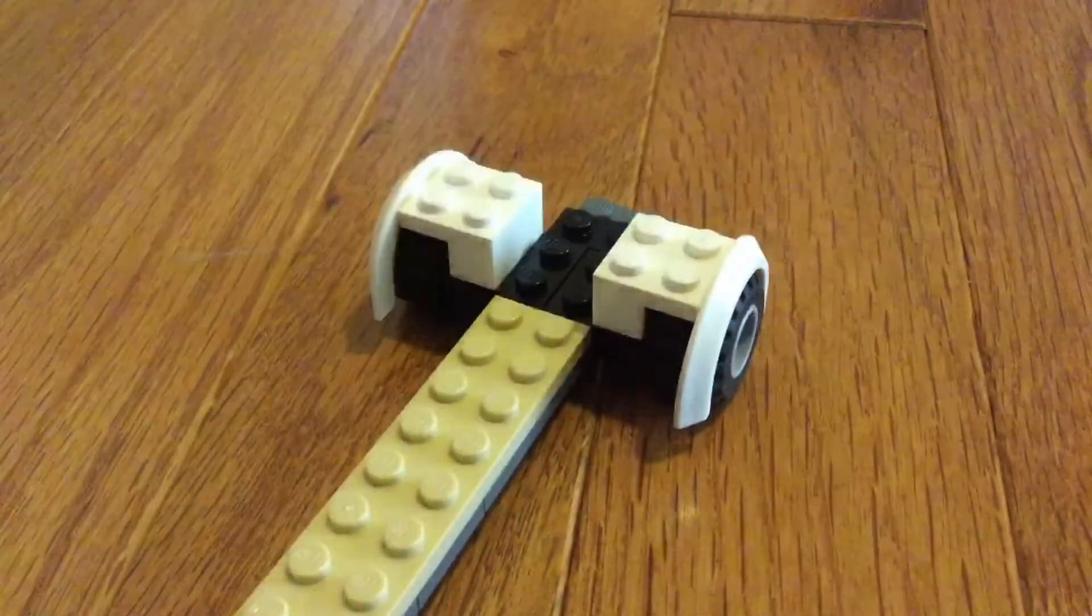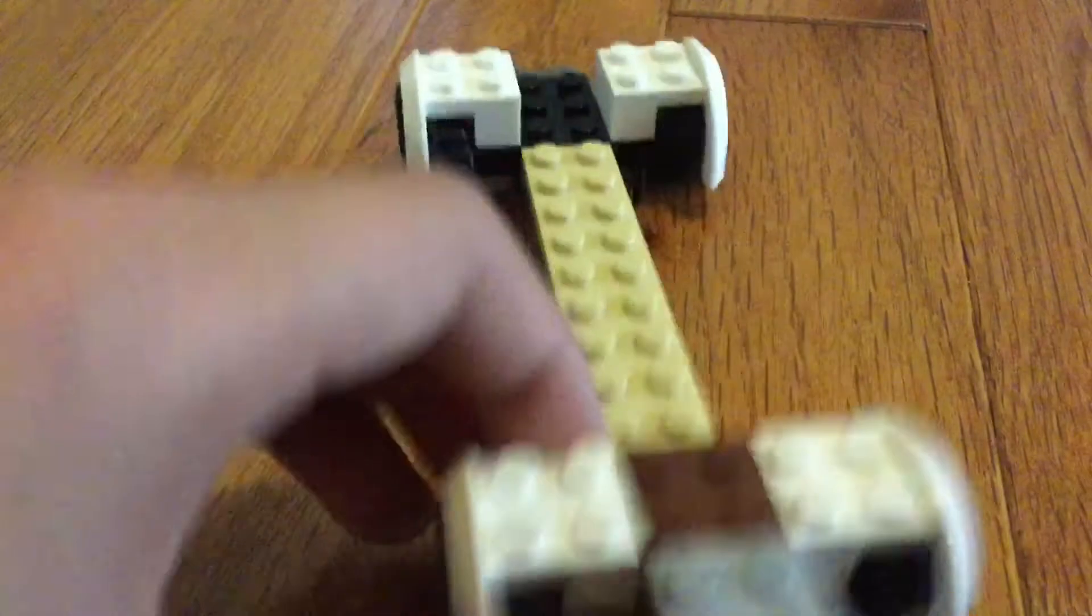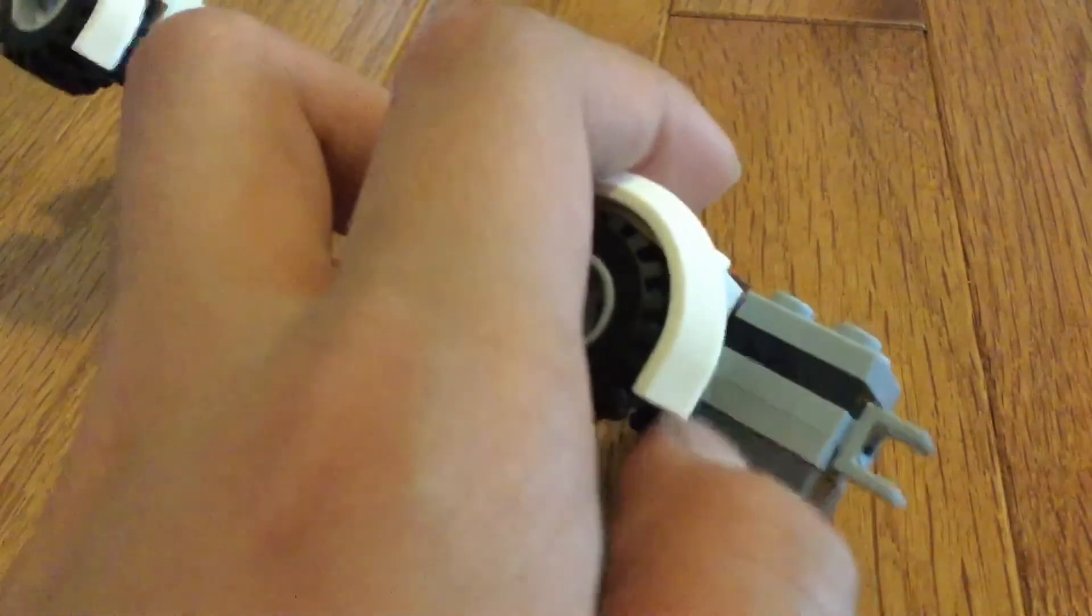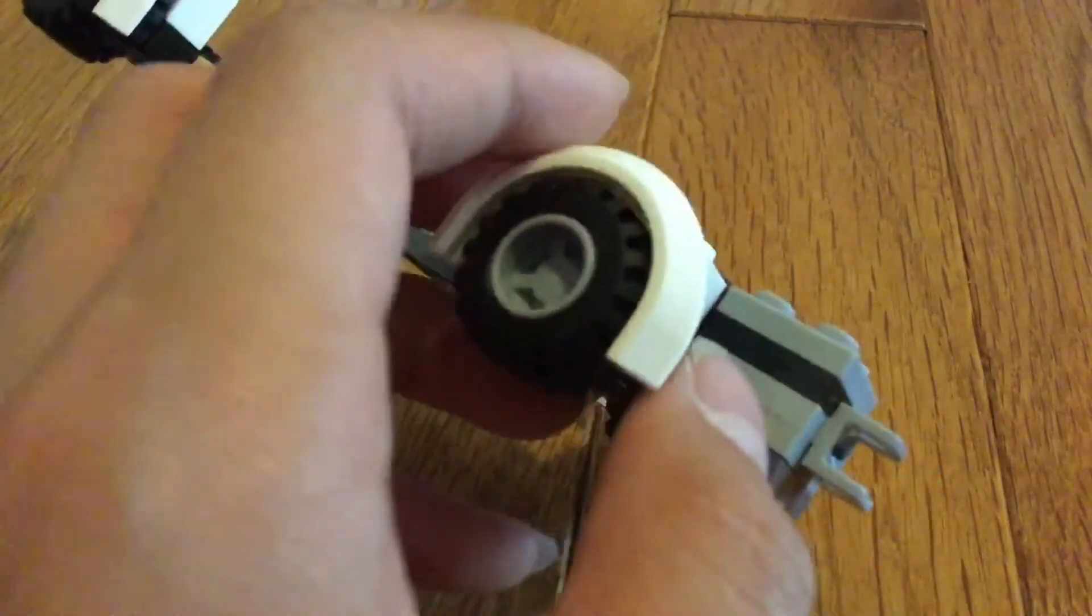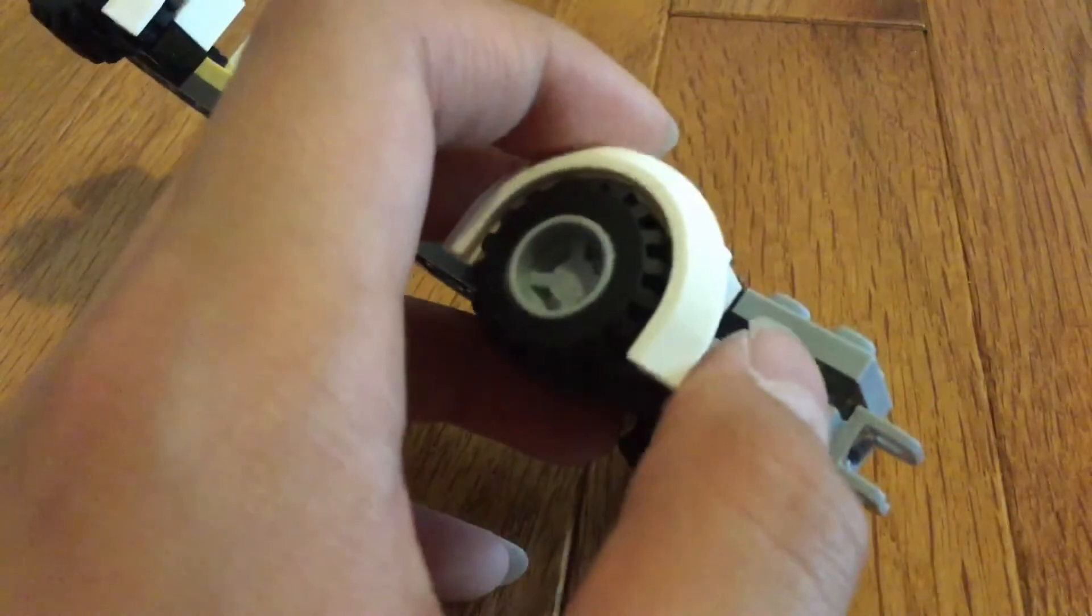Then you grab the pieces, put them on each side. You'll grab a two by two right here, two by two brick. You grab two two by two plates, put your one two by two plate, put your hitch.